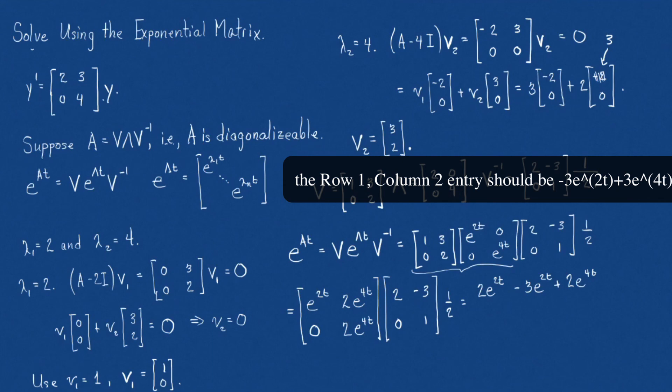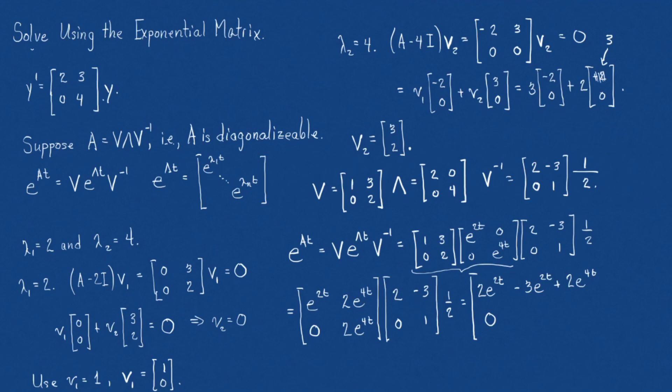Now, row 2, column 1, that's going to be a 0. That's a 0. And last one is row 2, column 2. That's going to be a 2E to the 4T. And there we have it.